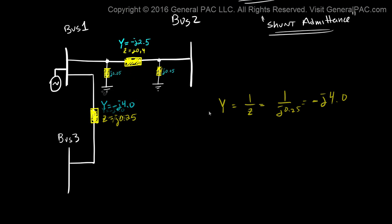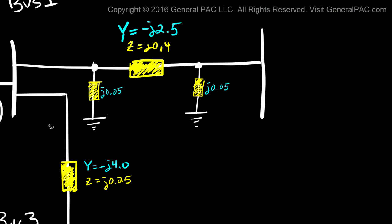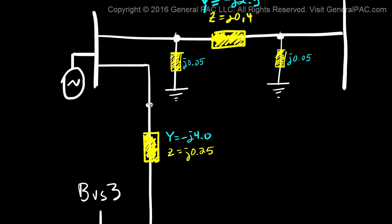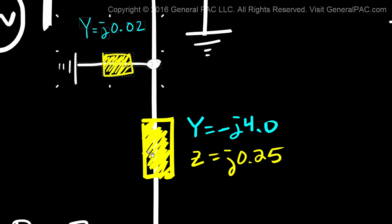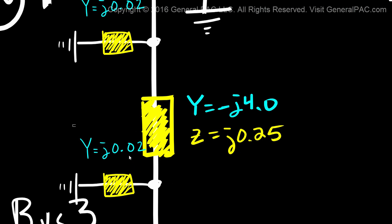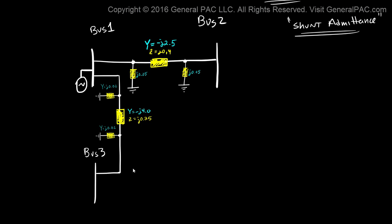Just like the previous transmission line, let's assume that the line spanning Bus 1 and Bus 3 is also a medium-length transmission line. So we'll model the shunt admittance for this transmission line as well. The shunt admittance for this line is equal to j0.02 on each end — one at the Bus 1 side and one at the Bus 3 side.